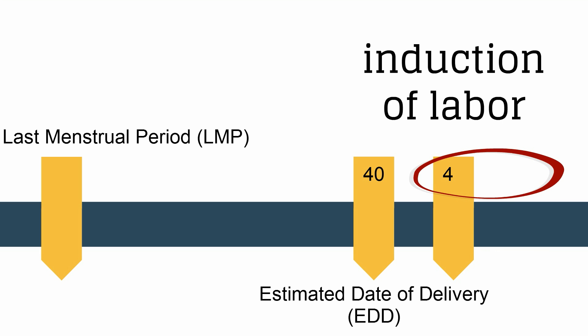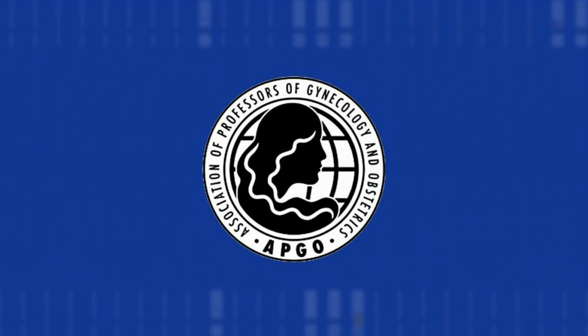Induction of labor should occur between 41 and 42 weeks estimated gestational age. This concludes the APCO video on post-term pregnancies. We reviewed a normal pregnancy duration, the importance of obtaining an accurate assessment of the estimated due date, and reviewed interventions for trying to decrease the morbidity and mortality associated with post-term pregnancies.